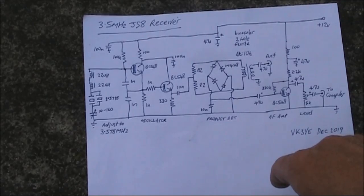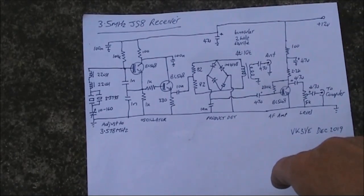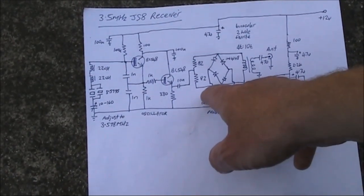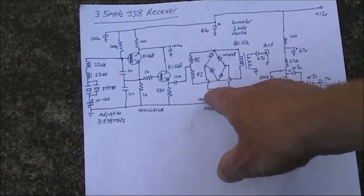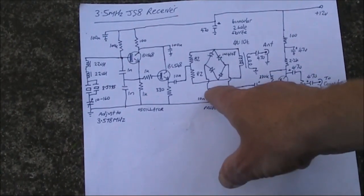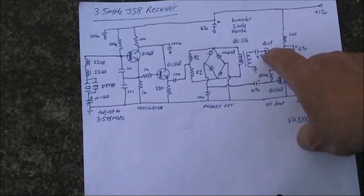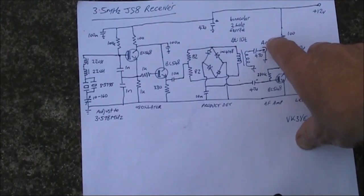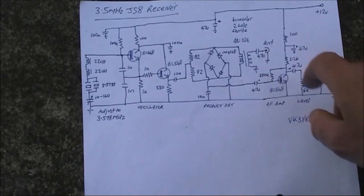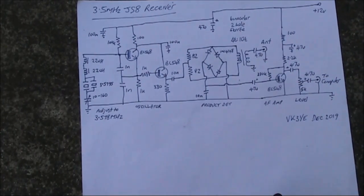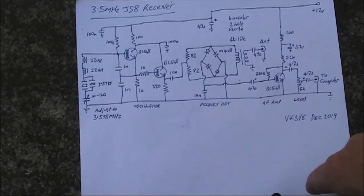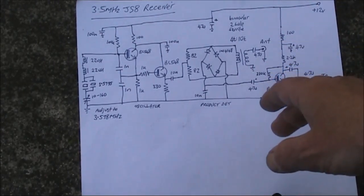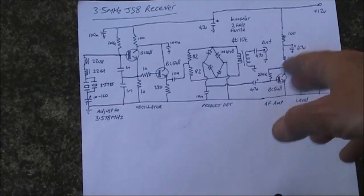And potentially, if you wanted to make this a JS8 transceiver, I haven't tried it, but I have done similar with other modes like Whisper, then you just need to apply audio from the sound card to this point on the product detector that makes it a balanced modulator. And then you tap out the RF from this point. It will be very low level, so you need two or three transistors to give you maybe a watt. That will be a double sideband signal, so only one sideband will be useful. But that should allow you to transmit on JS8. So, if you did that, you'd have a little box that you could plug into your laptop computer, and you could have keyboard contacts with this simple arrangement.